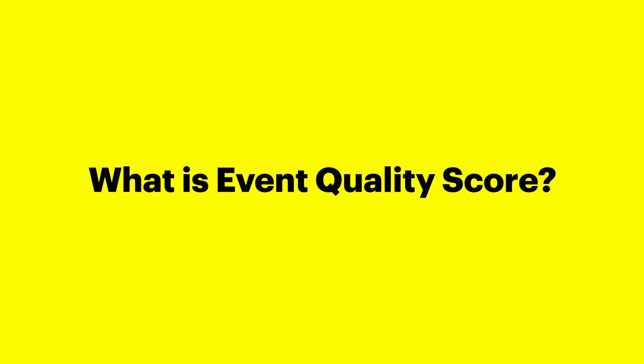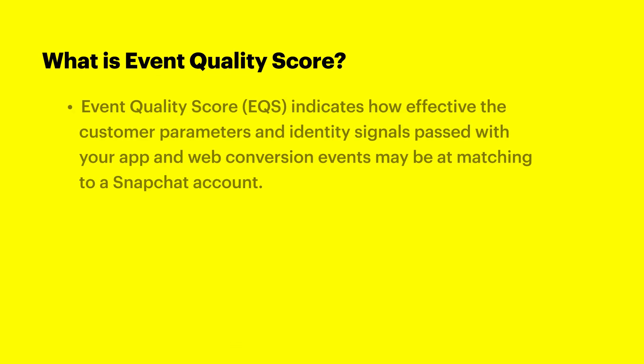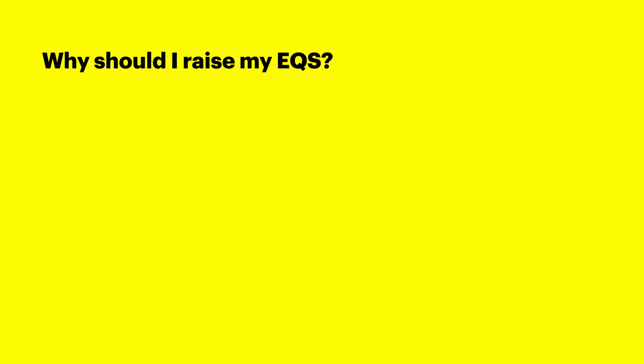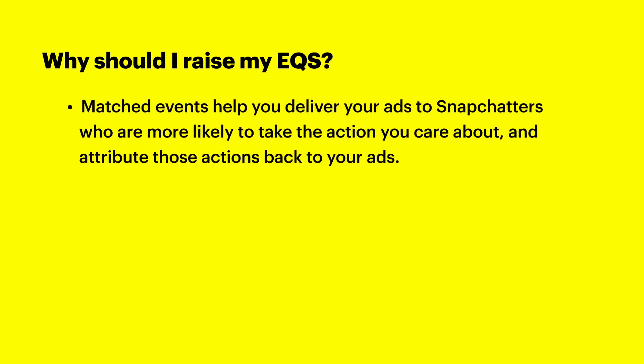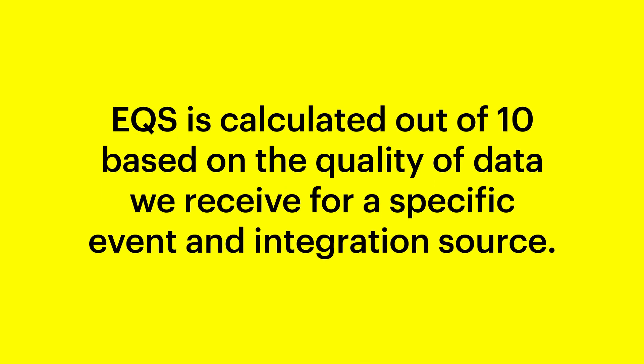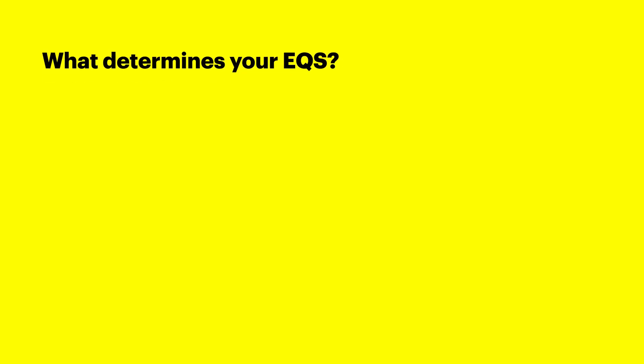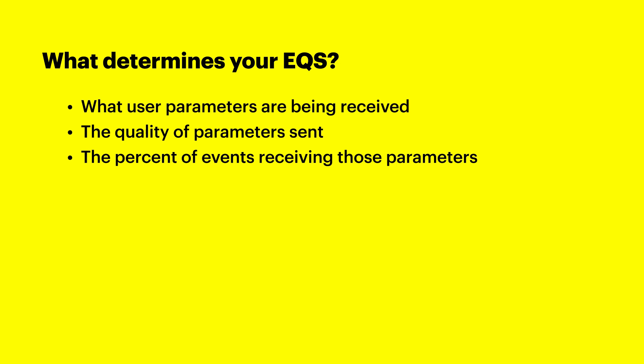Event quality score, commonly abbreviated to EQS, indicates how effective the customer parameters and identity signals passed with your app and web conversion events may be matching to a Snapchat account. Matched events help you deliver your ads to Snapchatters who are more likely to take action you care about and attribute those actions back to your ads. We calculate a score out of 10 based on the quality of the data we receive for a specific event and integration source. There are three main components to your score: what user parameters are being received, the quality of the parameters sent, and the percent of events receiving those parameters.